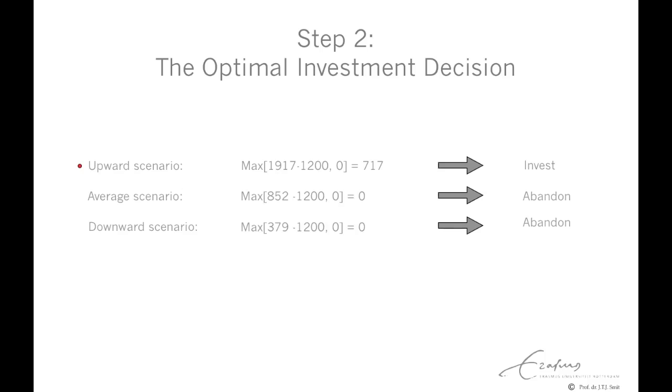Step 2 in the option valuation. Determine the optimal investment decision at the maturity of the option. At maturity of the option, the investment decision depends on the resolution of uncertainty. In an upward scenario, the value of the reserves would be worth 1.9 billion, which justifies the investment in the platform of 1.2 billion. And the payoff would be 717 million. So we make the investment decision there.